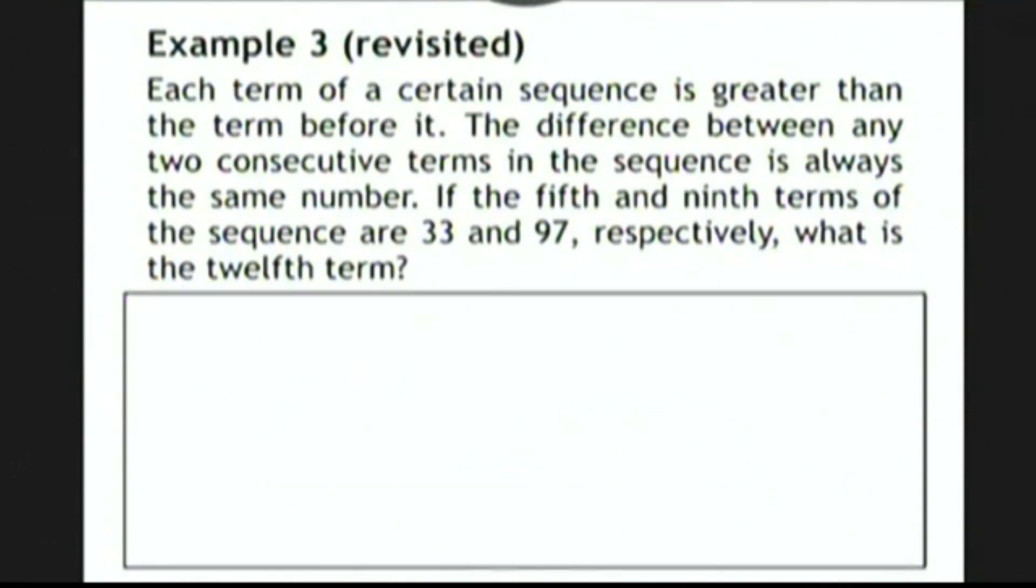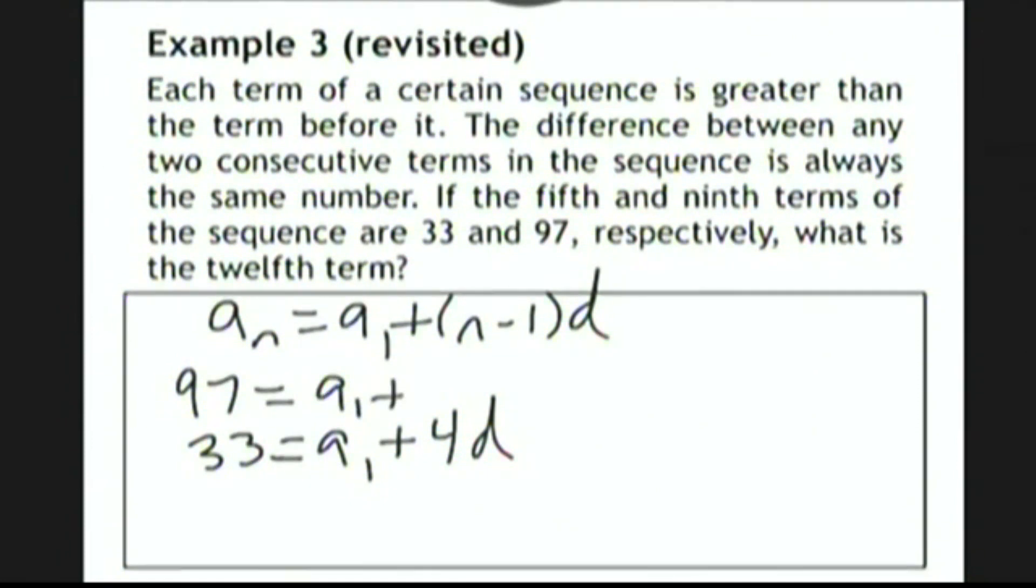Let's go back to example 3 and give one more solution to that problem using the arithmetic sequence formula. Remember that the formula is a_n = a_1 + (n-1)d. Now, the fifth term is given to be 33, so we have 33 = a_1 + 4d. If we're looking at the fifth term, then n minus 1 is 5 minus 1, which is 4.